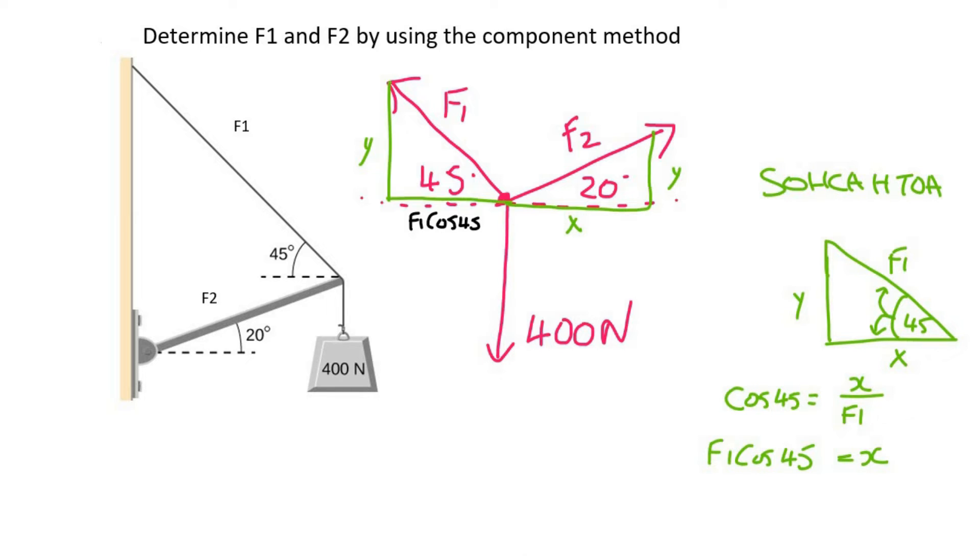Then I'm going to try to find the opposite, which is y, and so that's going to be opposite over hypotenuse, which is now sin. So I'm going to say sin 45 equals the opposite over the hypotenuse. I then get y alone by multiplying the F1 across like that, and so we can say F1 sin 45.